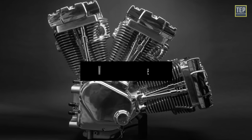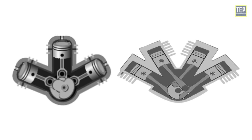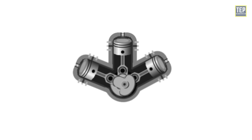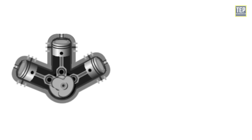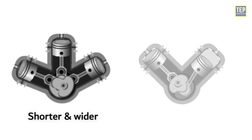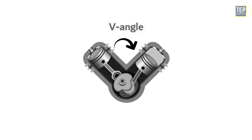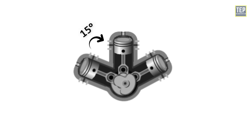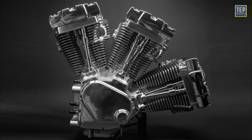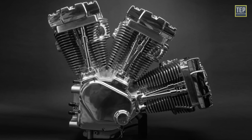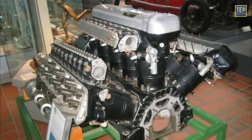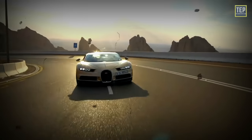A W engine is a type of piston engine where three or four cylinder banks use the same crankshaft, resembling the letter W when viewed from the front. W engines with three banks of cylinders are also called broad arrow engines. They are less common and are typically shorter and wider than a V engine. The angle between banks in a regular V engine is around 60 to 90 degrees; however, the V in a W engine is about 15 degrees, so you can't see the separation between each block.